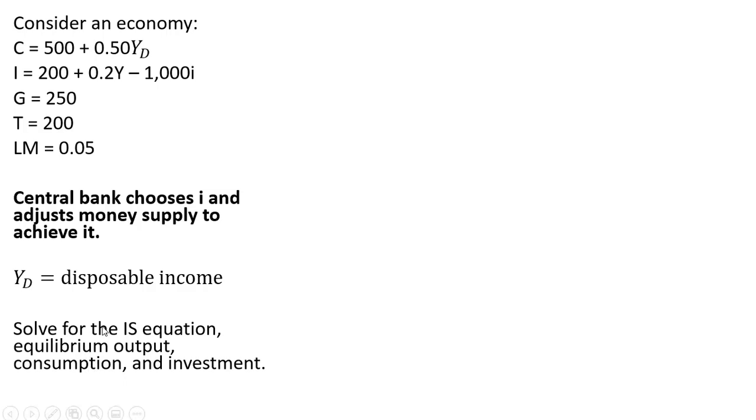So let's solve for the IS equation, equilibrium output, consumption, and investment. In equilibrium, Y will equal C plus I plus G. So we're going to substitute our information over here on the left into the right-hand side of this equation. So our consumption function, our investment function, and government purchases.